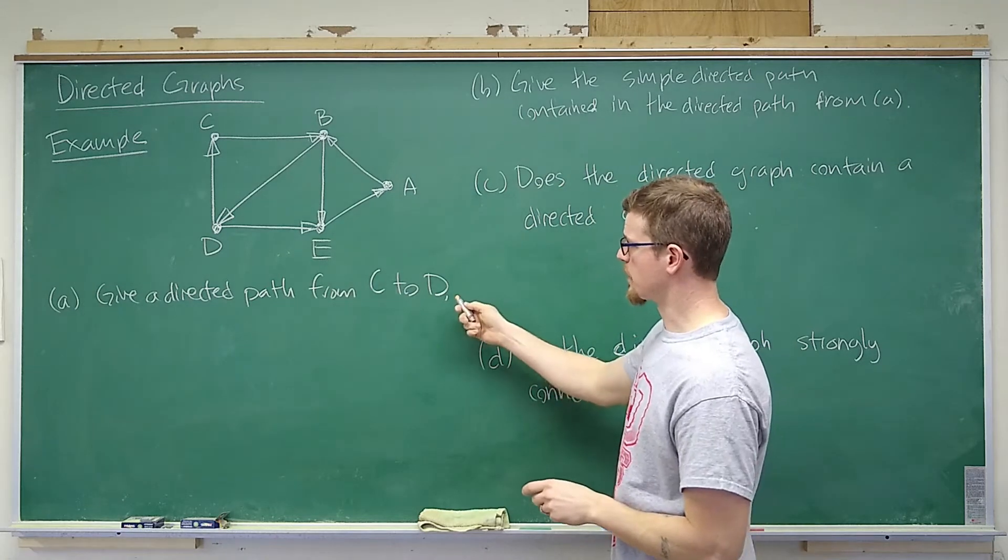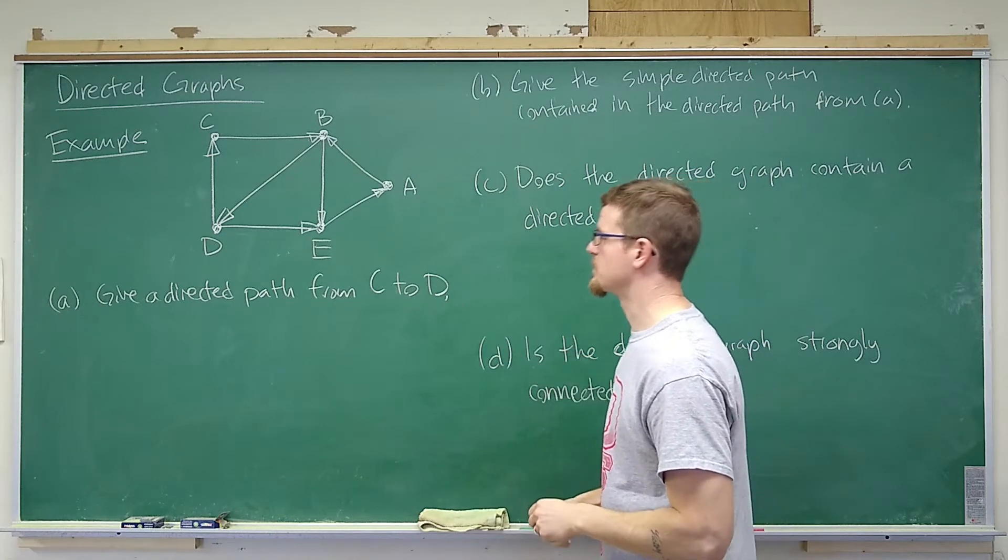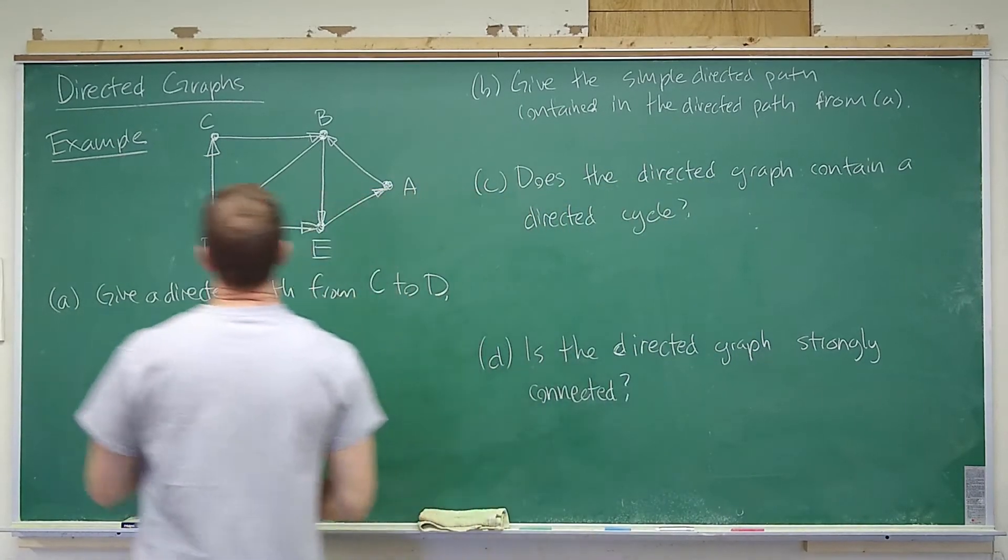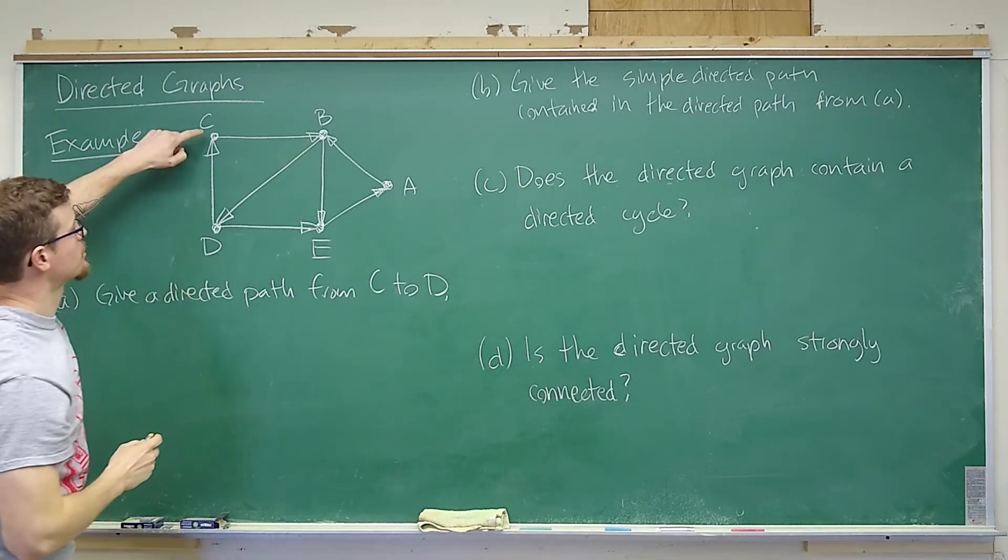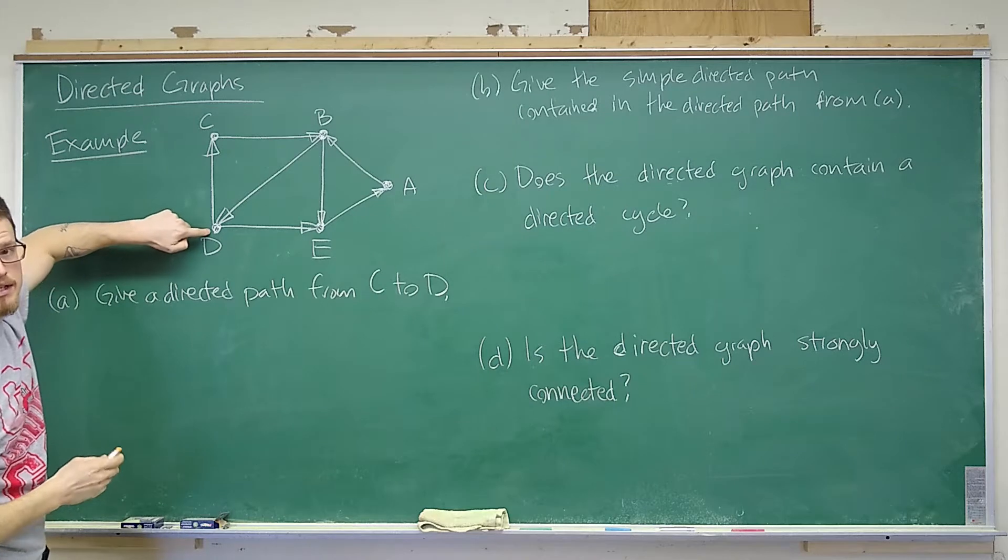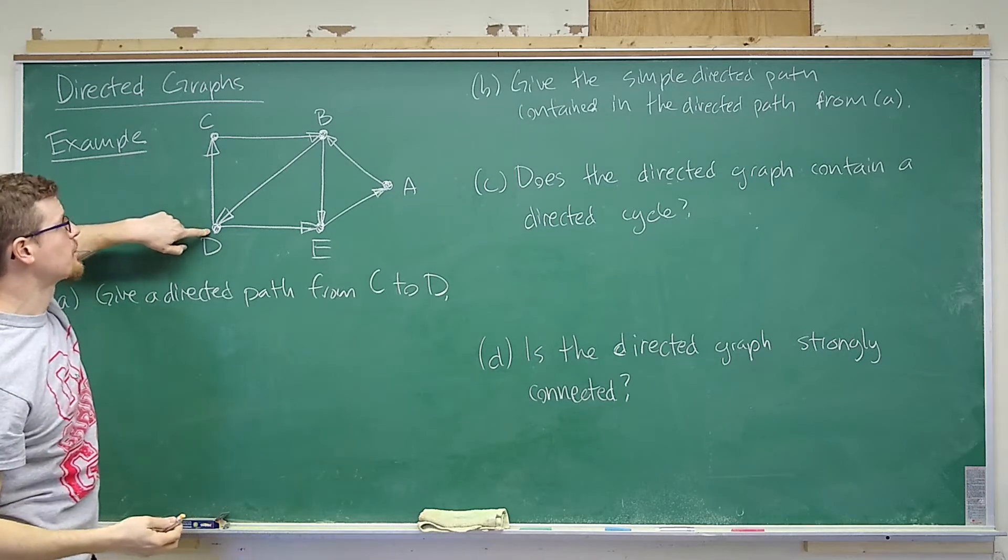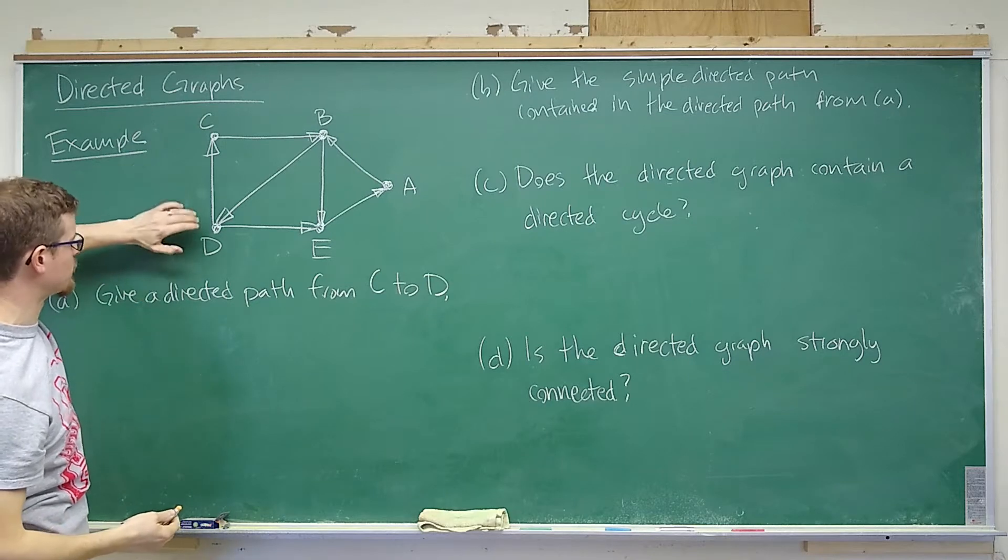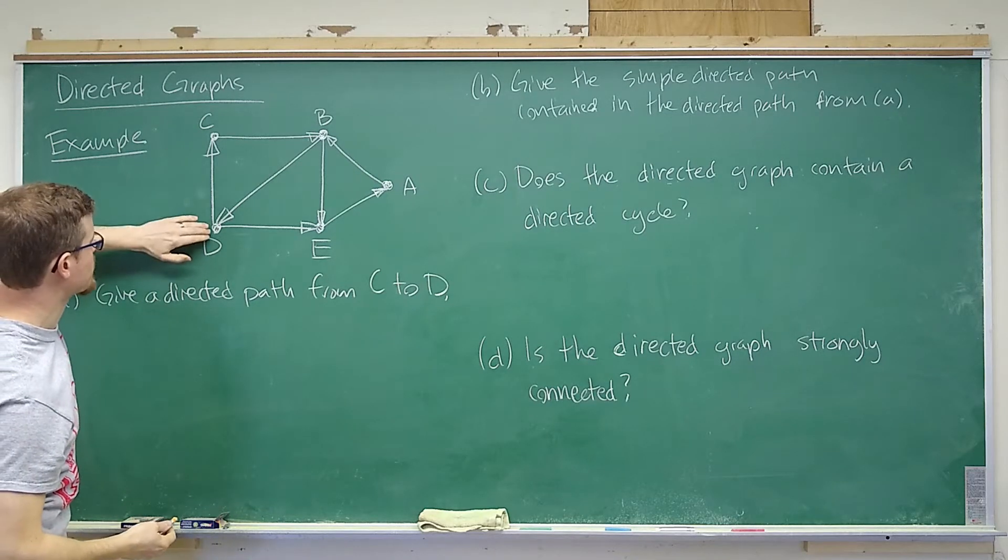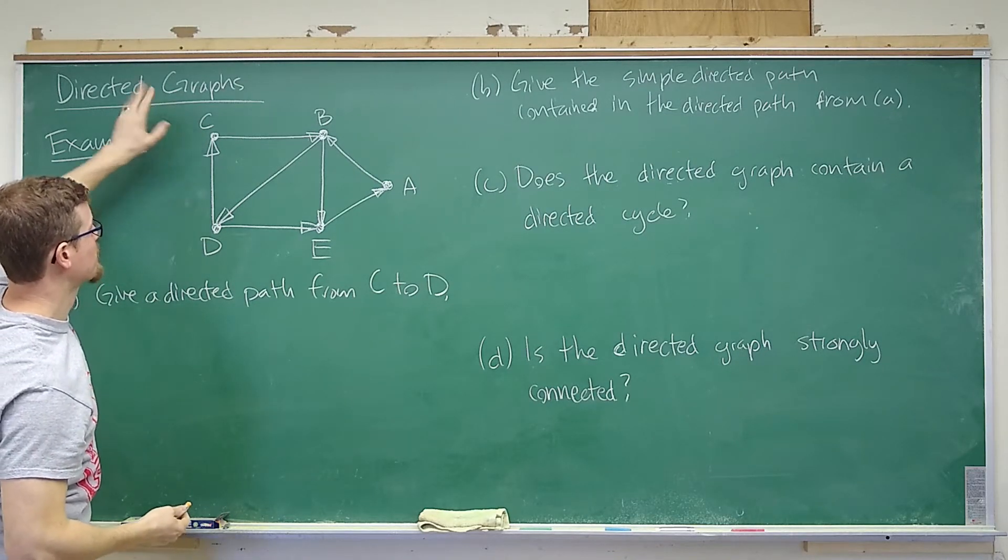For this example we want to give a directed path from C to D. Of course I can't just travel directly from C to D because that edge does not travel in that direction. This edge can take us from D to C, so we have to go some other way.